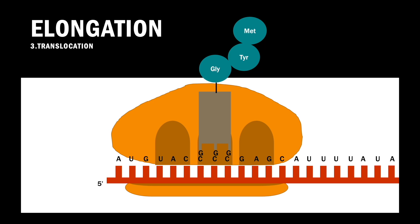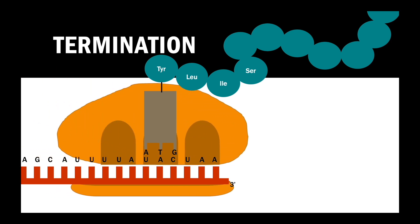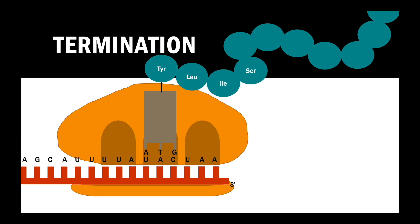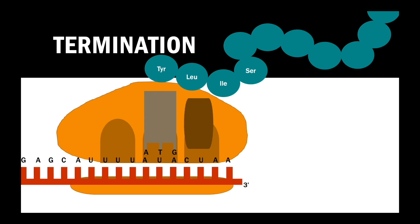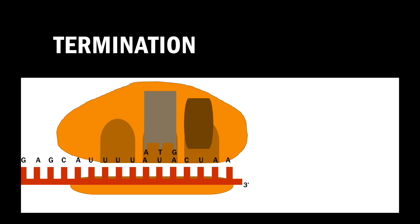These three-step cycles continue until termination. Termination happens when a stop codon enters the A site of the large ribosomal subunit. There are three stop codons: UAA, UAG, and UGA. When a stop codon enters the A site, a factor called the release factor enters the A site. It then digests the bond holding the polypeptide chain to the tRNA in the P site. When this happens, the polypeptide chain is released and the translation complex dissociates.